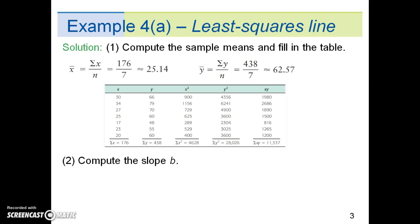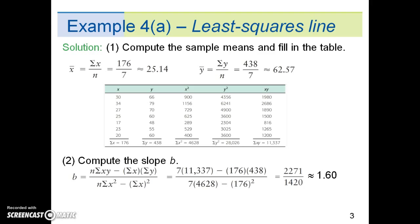For step 2 we need to compute the slope b. So here we plug it into the computational formula. We just plug and chug and we get a result of about 1.6.